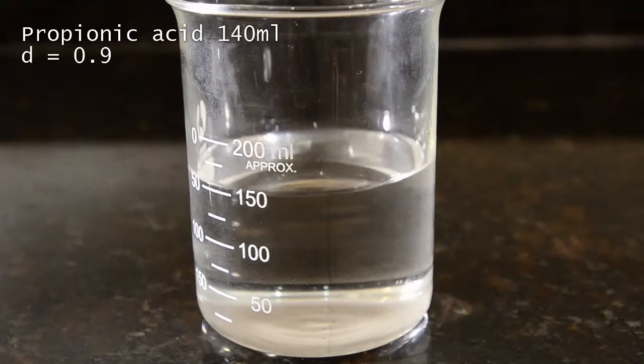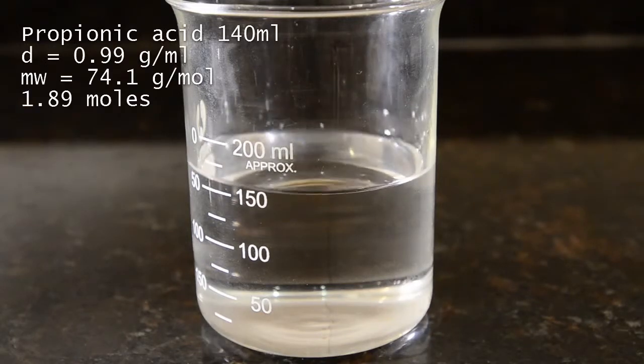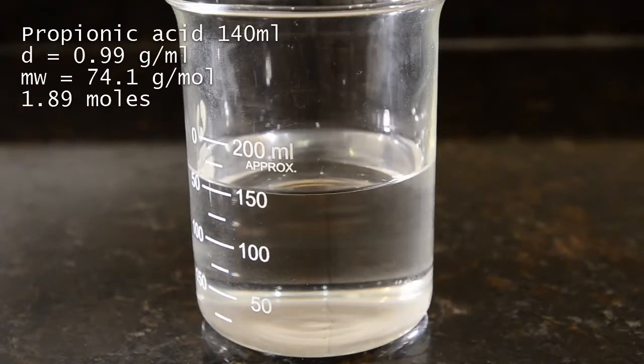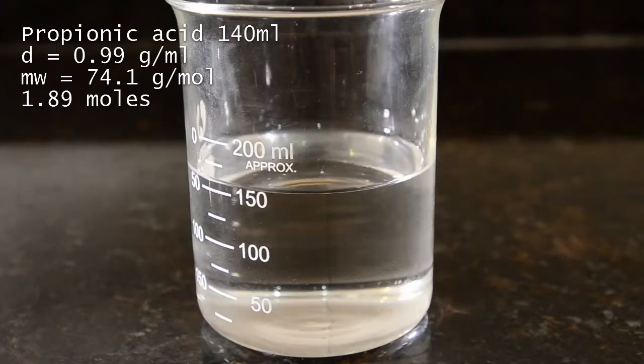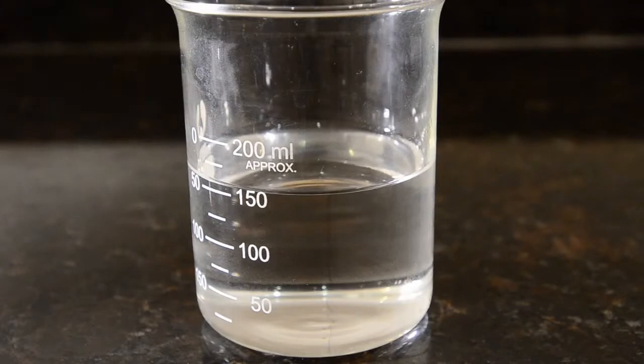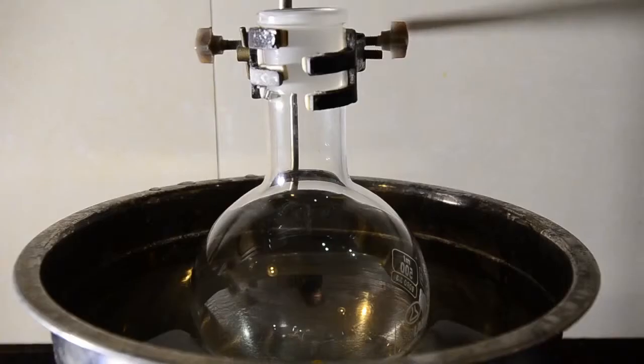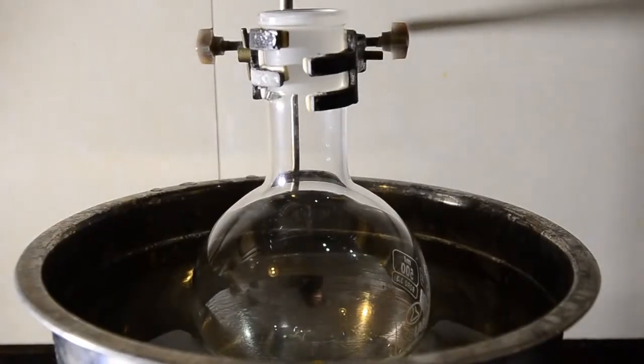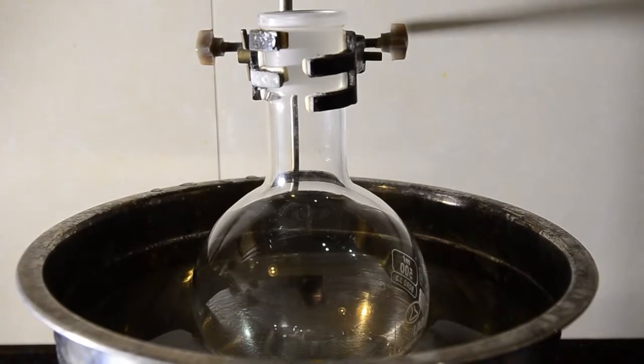We are going to prepare propionyl chloride. First, measure out 140 ml of liquid propionic acid as anhydrous as possible. Set up a 500 ml round bottomed flask on a water bath at room temperature. This needs to have very good ventilation.